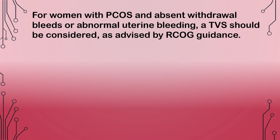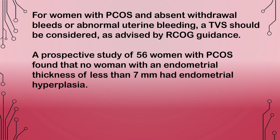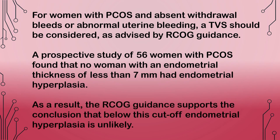For women with PCOS and absent withdrawal bleeds or abnormal uterine bleeding, a transvaginal ultrasound scan should be considered as advised by RCOG guidance. A prospective study of 56 women with PCOS found that no women with an endometrial thickness of less than 7 mm had endometrial hyperplasia. The RCOG guidance supports that below this cutoff, endometrial hyperplasia is unlikely.